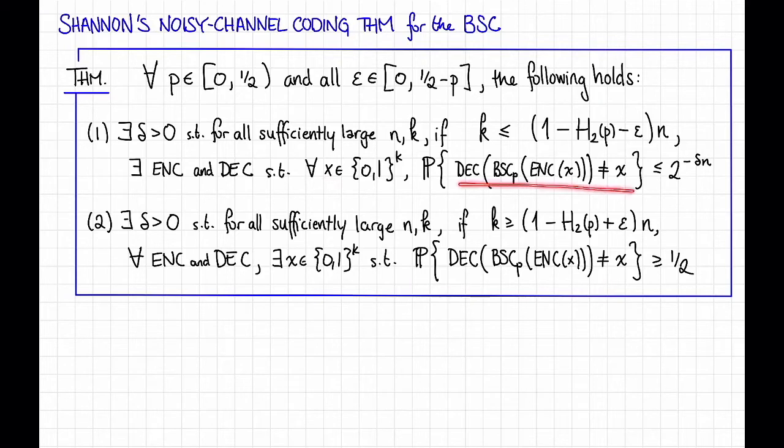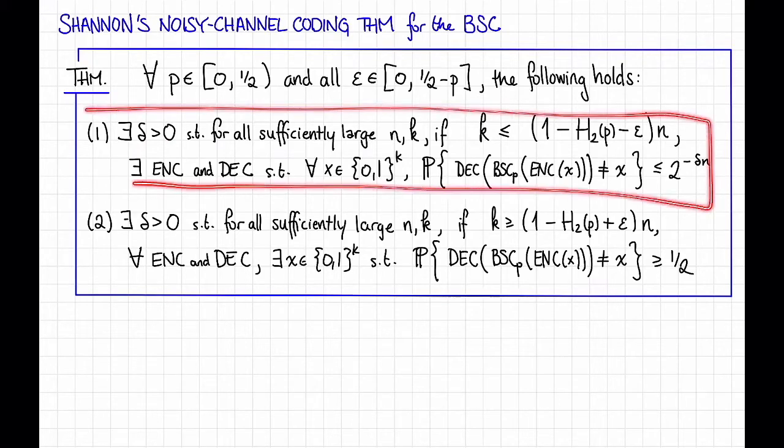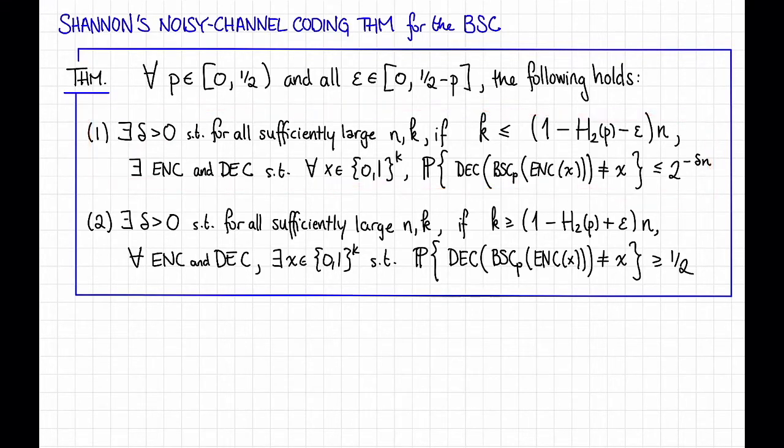The failure probability, that is the probability that the decoder doesn't actually return the actual message, is less than or equal to 2^(-δn), where delta was this constant from the beginning. That is, thing one here says that if the rate is a little bit less than 1 - H_2(P), the probability of failure is tiny.